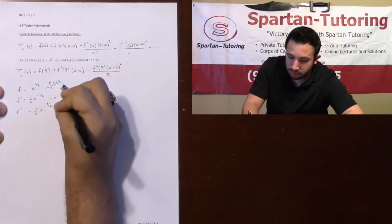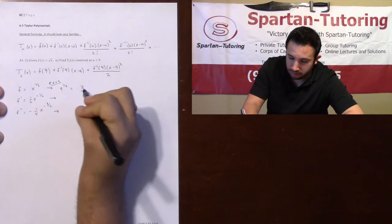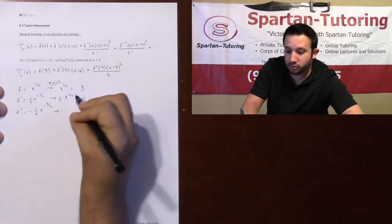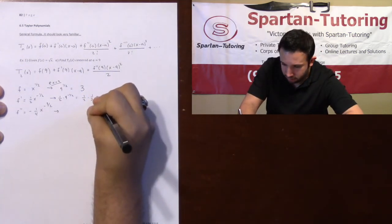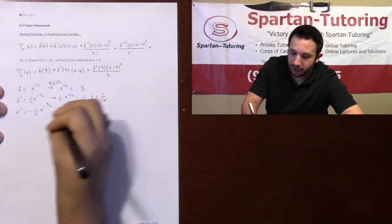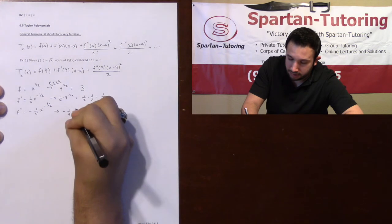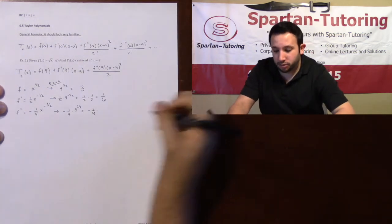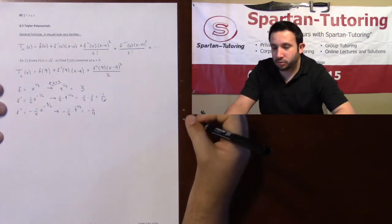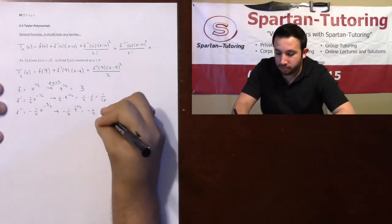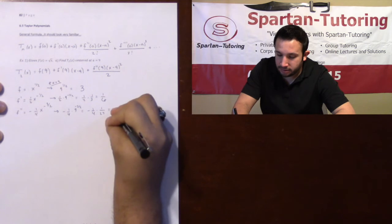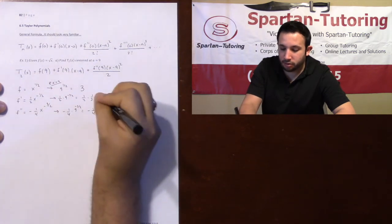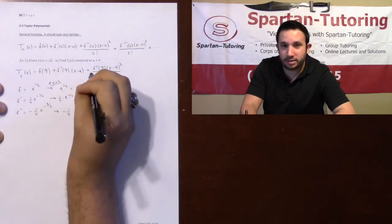Now we just got to do it at 9. At x equals 9, the square root of 9 is 3. Here, one half times 9 to the negative one half is one half times, well, one over square root of 9 is just one third, so that'd be one sixth. And then for this one, I'm gonna have negative one fourth times 9 to the negative three halves, which will be negative one fourth times, 9 to the three halves is 27, the negative exponent means it goes on bottom, so one over 27. This comes out to negative one over 108.